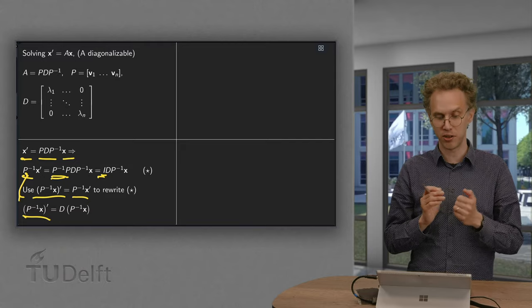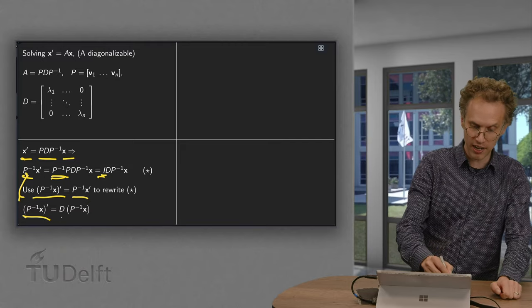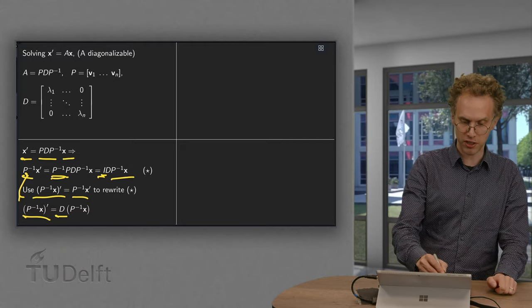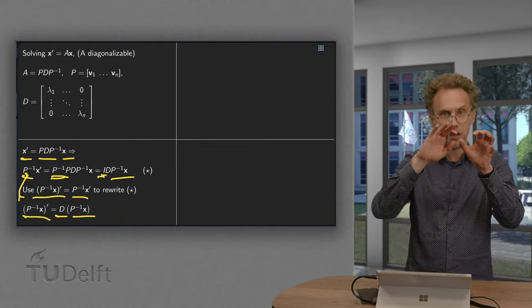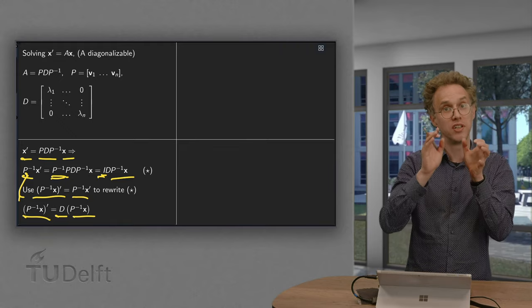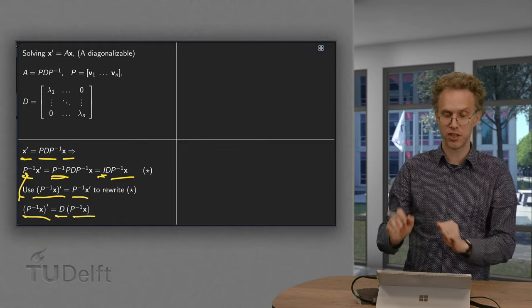And we cancel out here the identity matrix. Identity matrix times diagonal matrix is just the diagonal matrix. And we are left with the p inverse times x over here. So p inverse x prime equals diagonal matrix times p inverse times x.